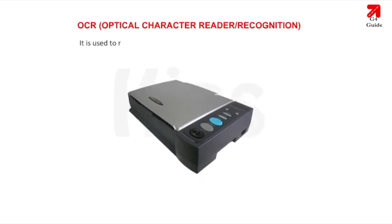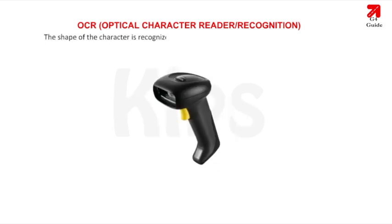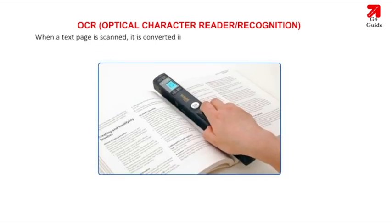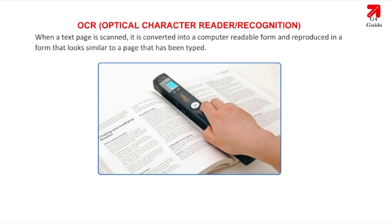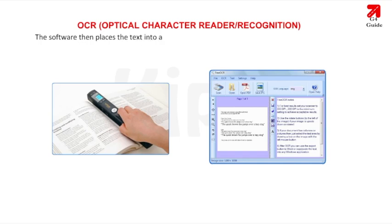OCR (Optical Character Recognition) is used to read characters from a printed paper into the computer. The shape of the character is recognized through a light source in conjunction with photoelectric cells. When a text page is scanned, it is converted into a computer-readable form and reproduced to look similar to a typed page. The software then places the text into a document that can be edited using any word processor or text editor.